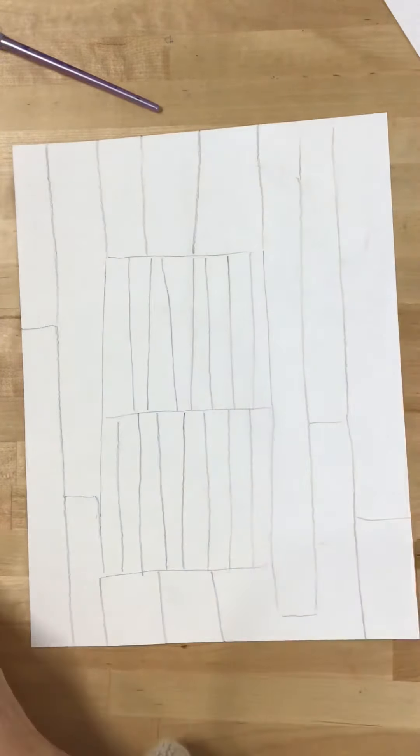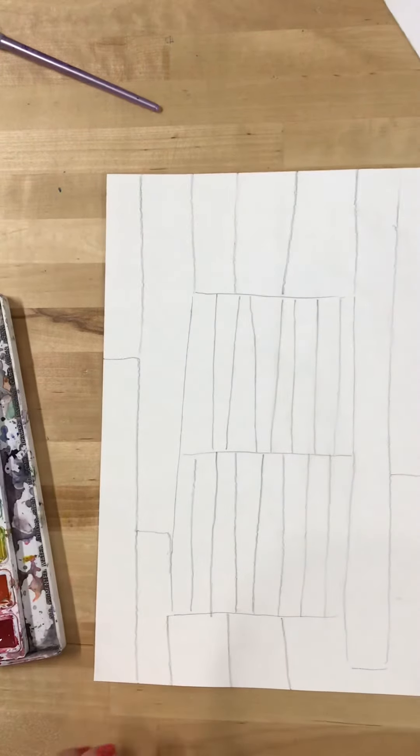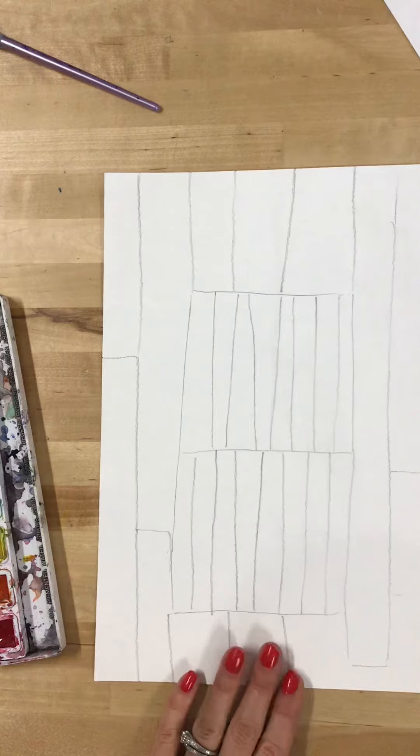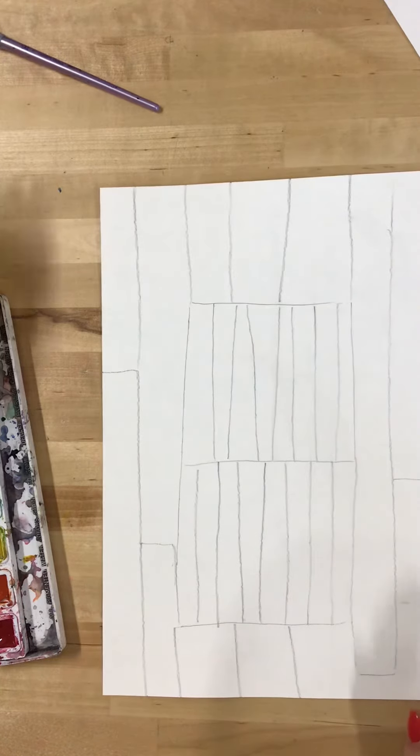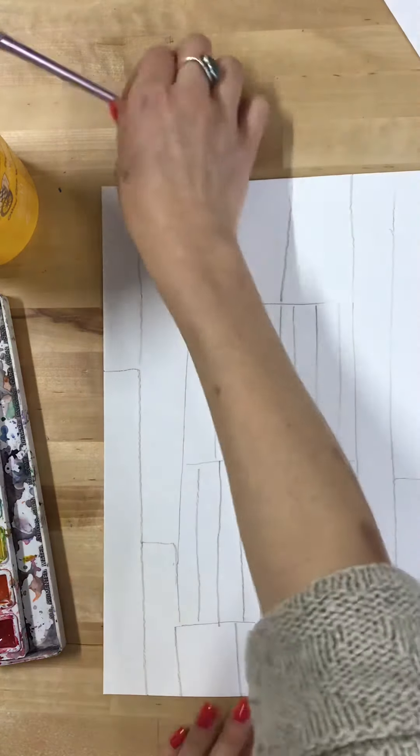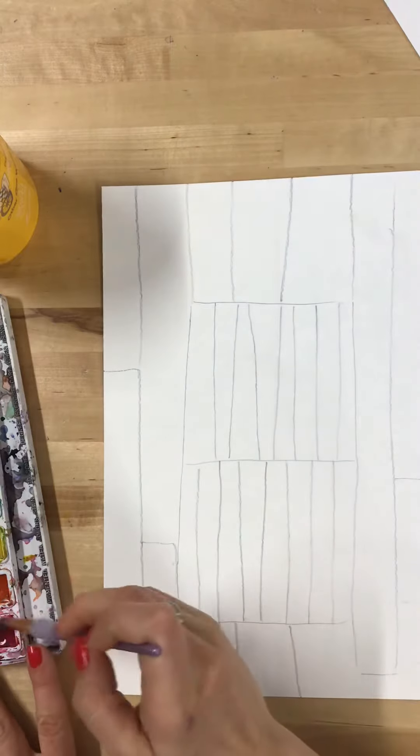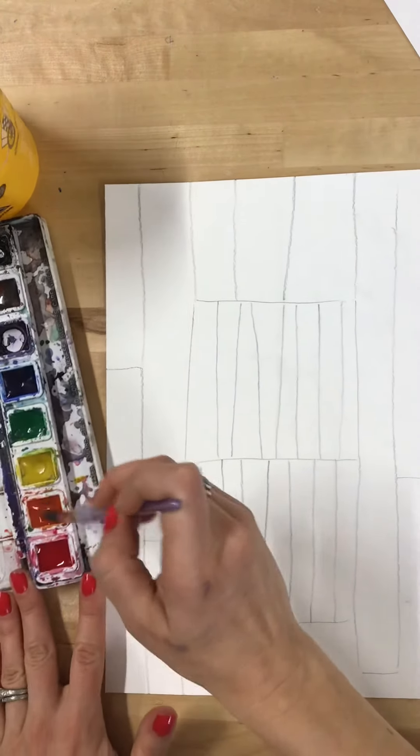And then here I have my watercolor supplies. So you can choose if you want to watercolor your quilt or paint your quilt to look like the example you're being inspired by, or do you want to come up with your own just based on the patterns that you're seeing. I'm going to start with a reddish orange, so I'm waking up my paint.